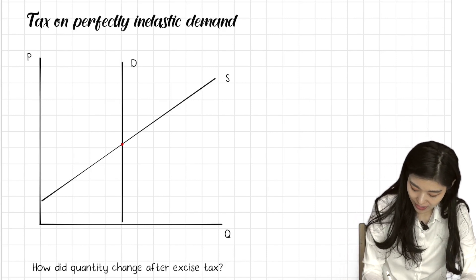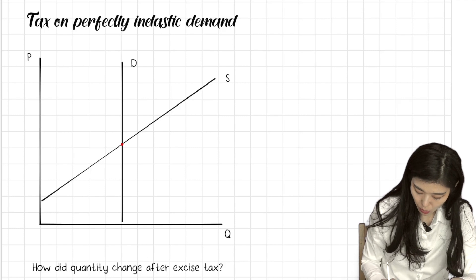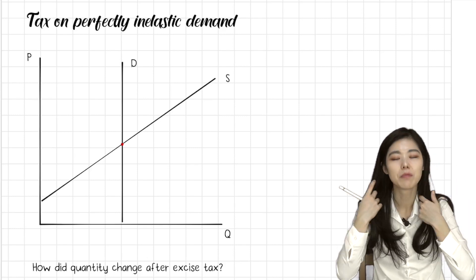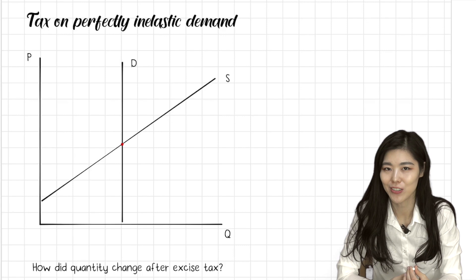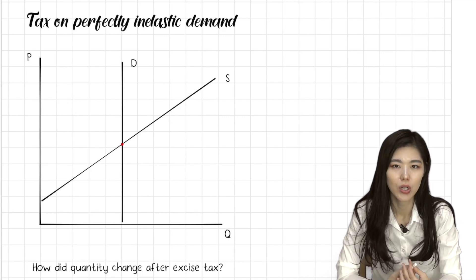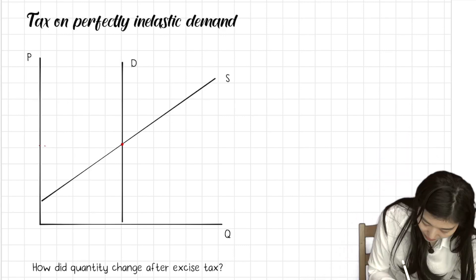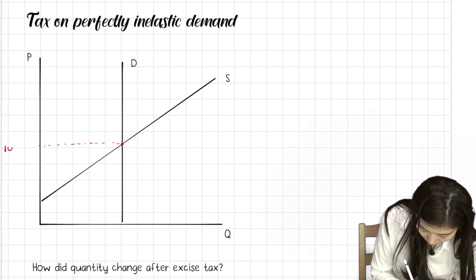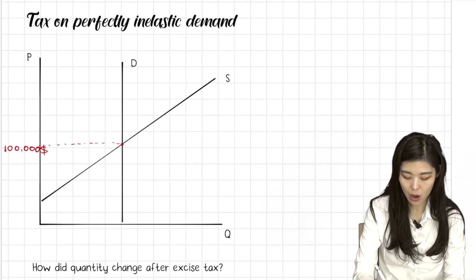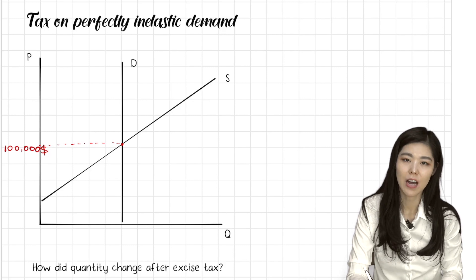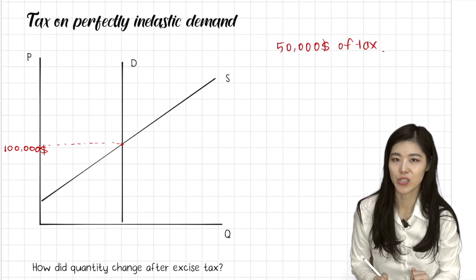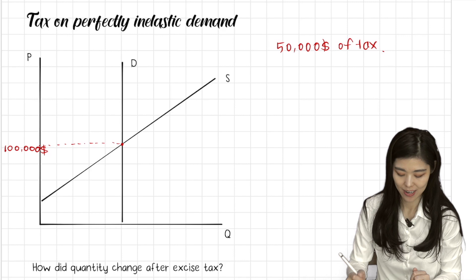I would have a perfectly inelastic demand no matter what it costs. But then, the government doesn't want people to misuse that pill, so they would tax that pill. So let's say that before, that pill cost like $100,000. However, the government levied $50,000 of tax. So what do you have to do when the government levies tax like that?